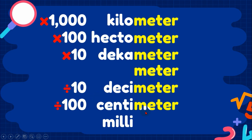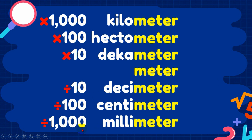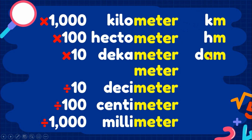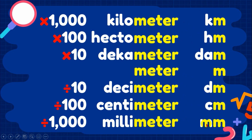These are the metric units for length and their abbreviations: kilometer is km, hectometer is hm, decameter is dam, meter is m, decimeter is dm, centimeter is cm, and millimeter is mm.